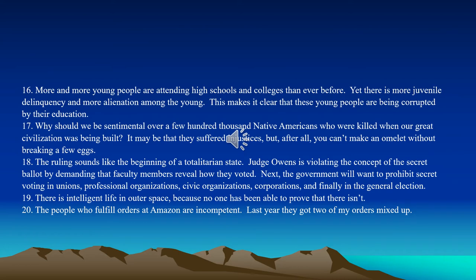Number sixteen: More and more young people are attending high schools and colleges than ever before, yet there is more juvenile delinquency and more alienation among the young. This makes it clear that these young people are being corrupted by their education. This would be an example of a false cause fallacy because there's no reasonable causal connection between a college education and juvenile delinquency and alienation. It's not the increasing education that is causing those phenomena — it could be economic or political factors.